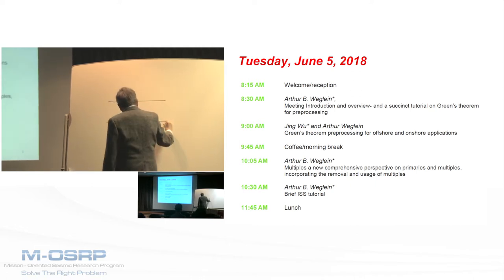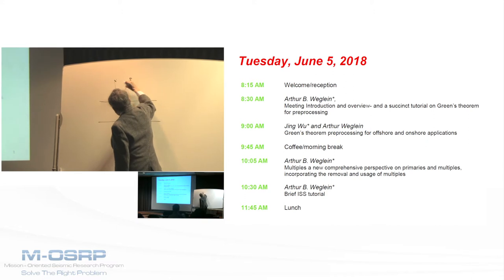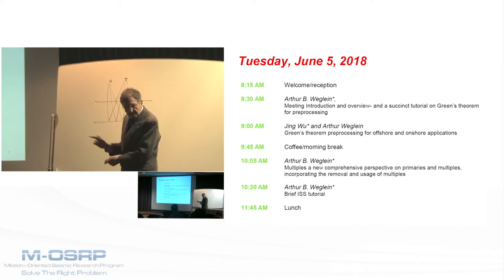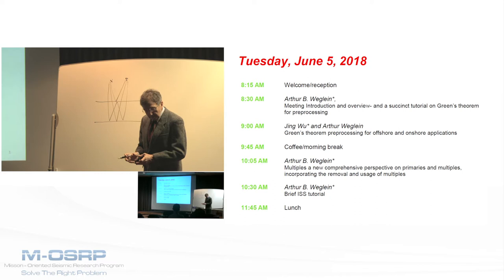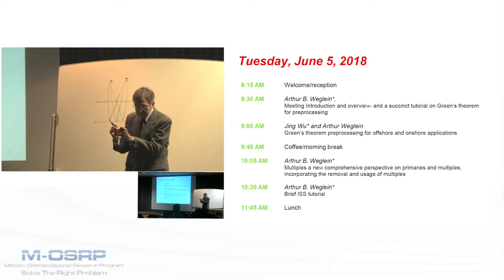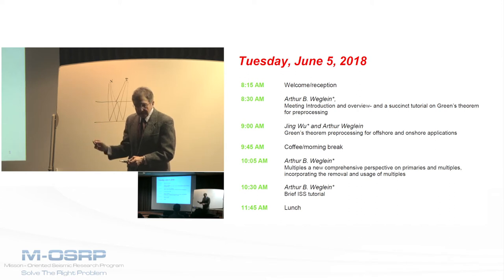Here's one reflector, here's another reflector, here's a source and receiver where you actually recorded. You recorded this primary, this primary, and this internal multiple. Migration is linear — in 1D normal incidence, each event on a trace linearly corresponds to its event at depth. There's some factor on each event that linearly alters it to what that event would look like if your recording was at depth, event by event.